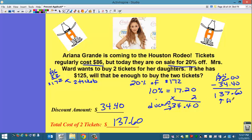So the final cost is $137.60. Does she have enough if she only has $125? No, she does not have enough — she'll have to go back home and get some more money. This is the type of problem where you use multiple percent applications, where you have more than one thing to find in order to come up with the final cost.